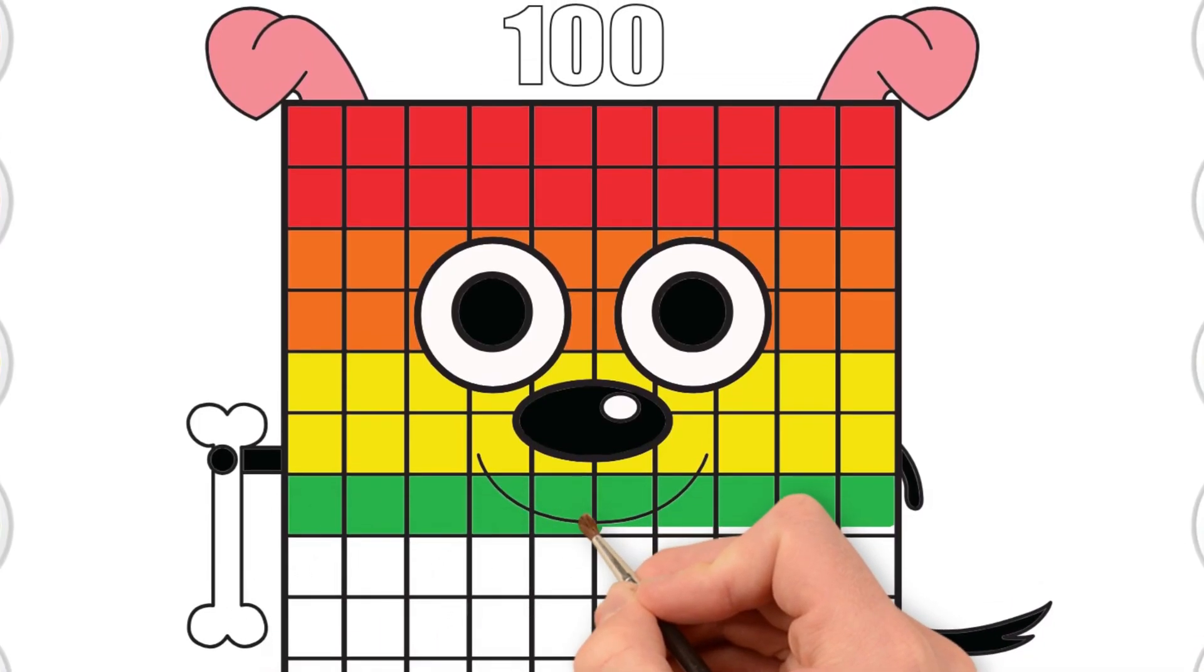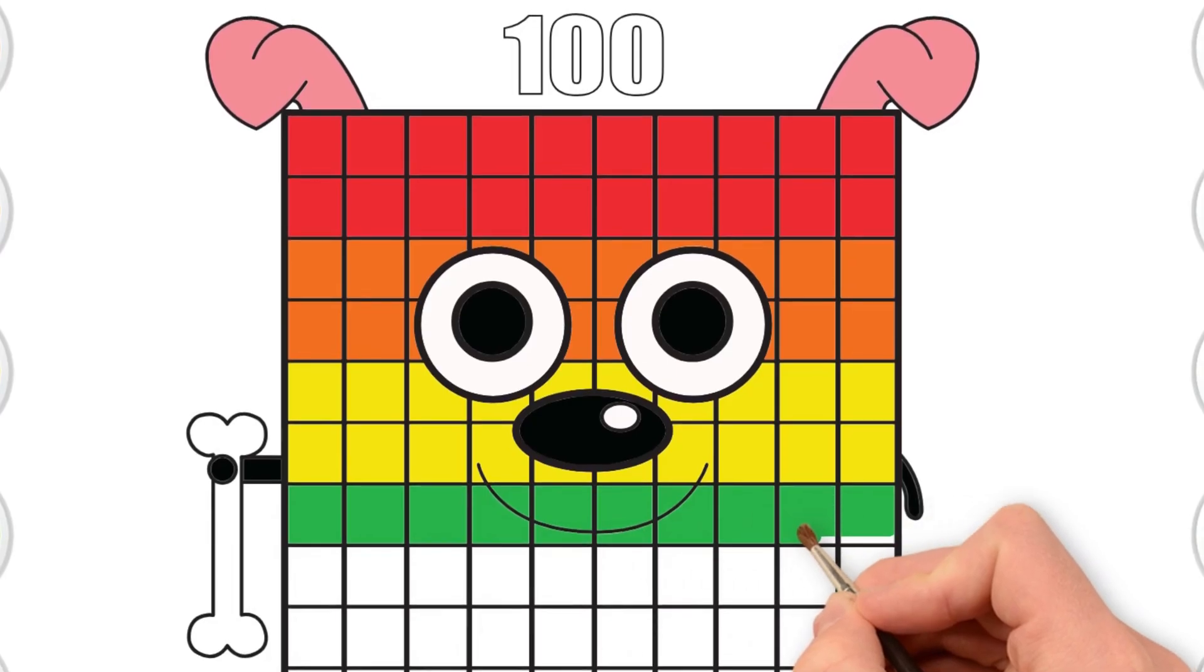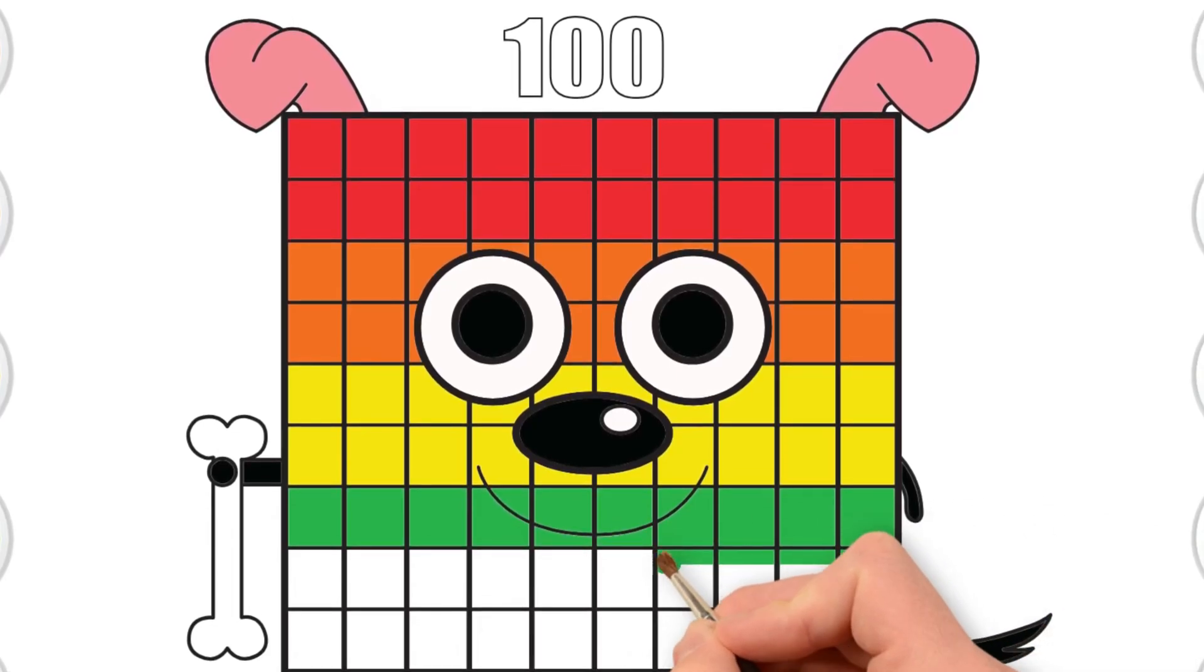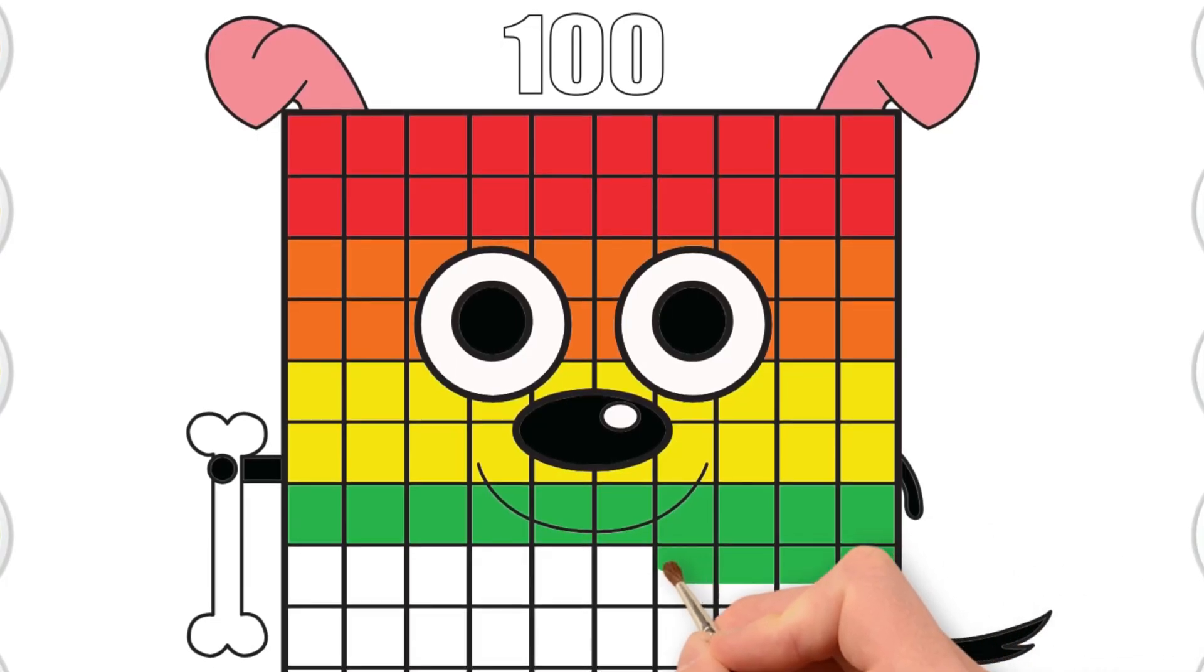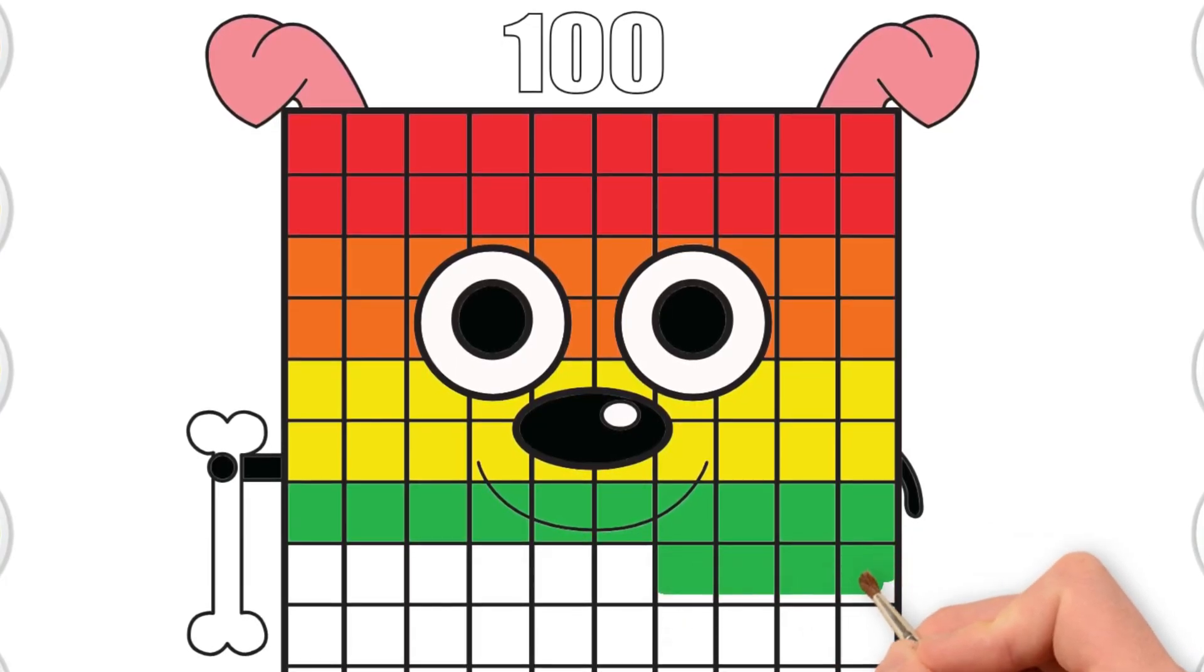Can you jump up eight times for eight rows you've colored so far? Woof, woof. Green is the color of grass. I love running on grass.